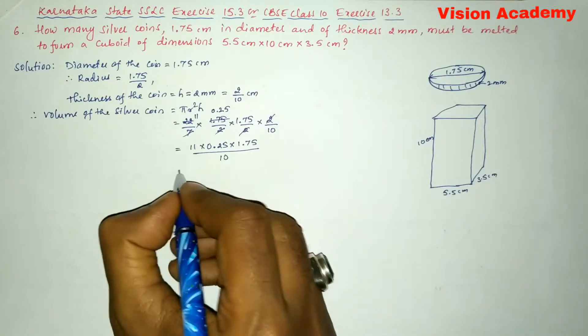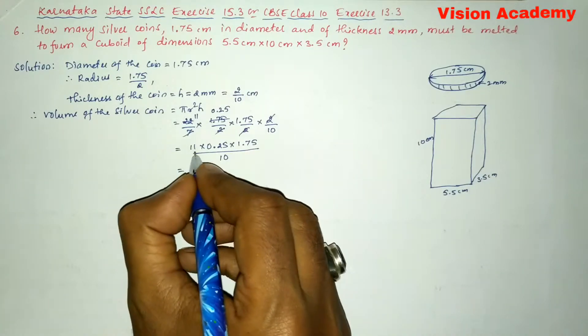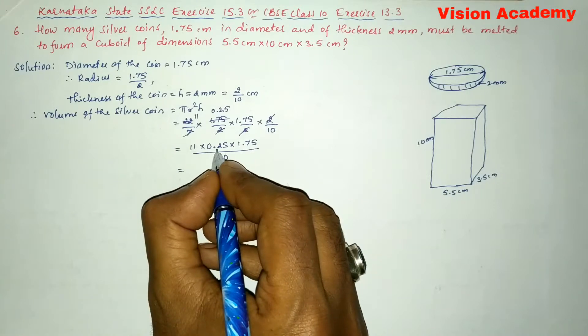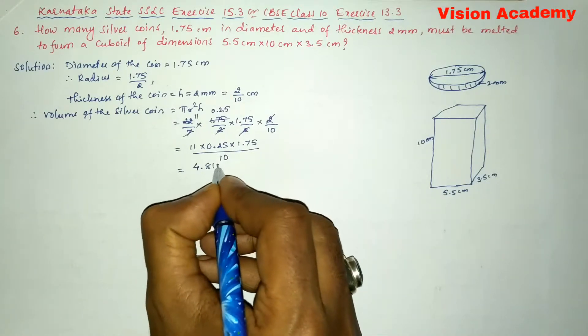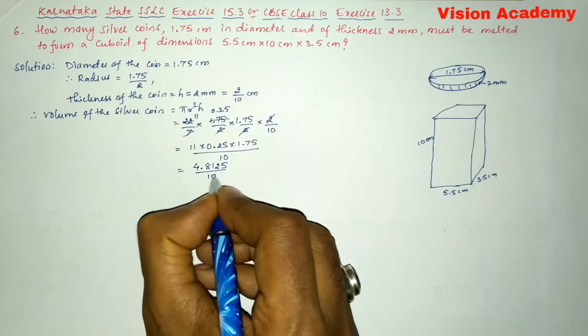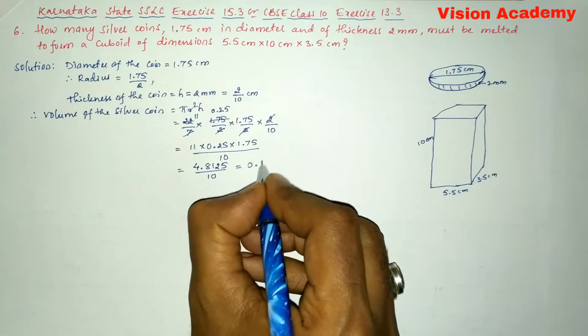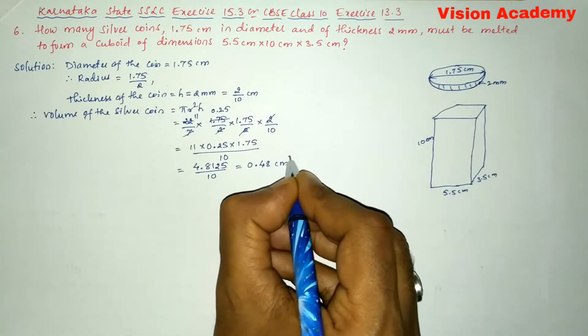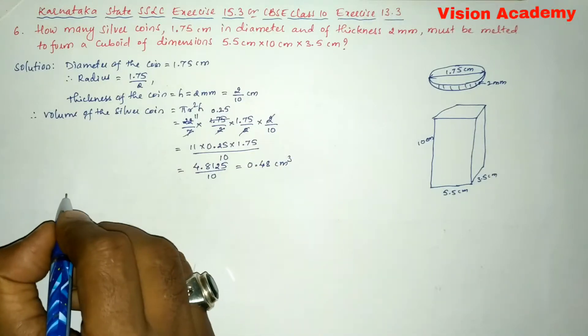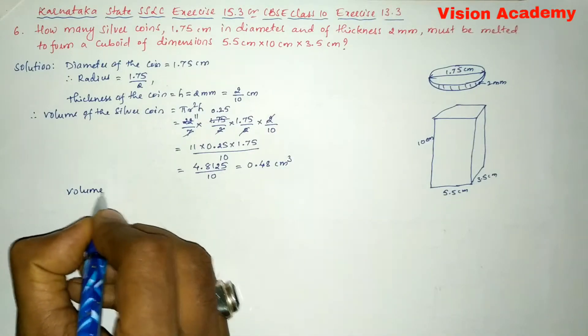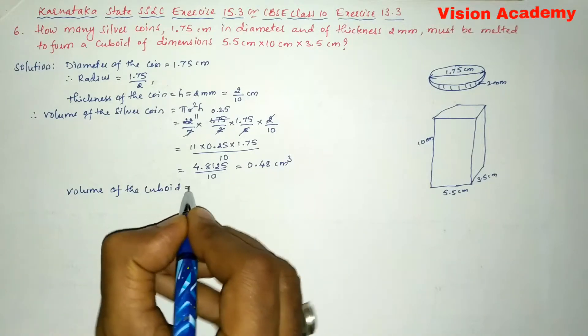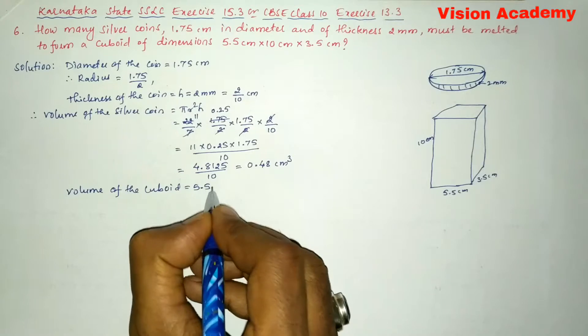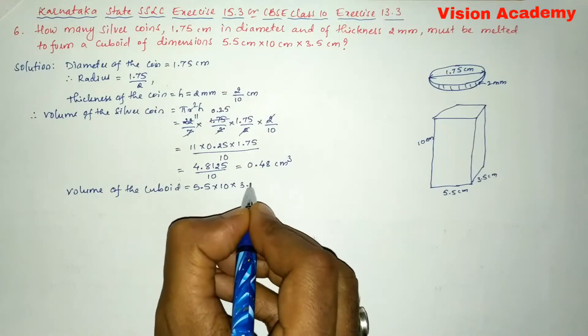Now we'll write volume of the cuboid is equal to 5.5 × 10 × 3.5, which is equal to 192.5 centimeter cube. Therefore number of silver coins required to make the cuboid...